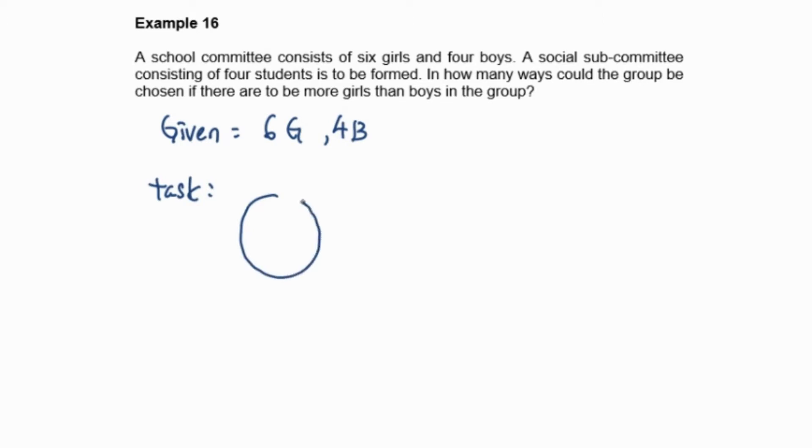In how many ways could the group be chosen if there are to be more girls than boys in this group? So our condition here is for these four people, it must have more girls than boys in the group.